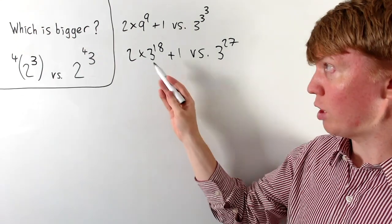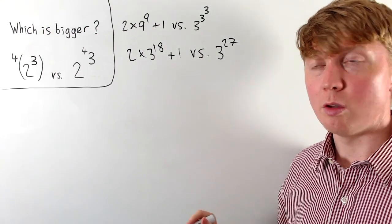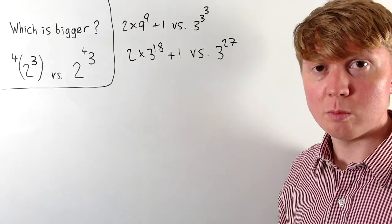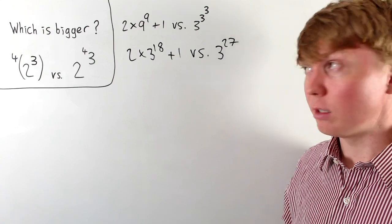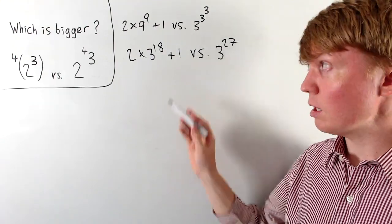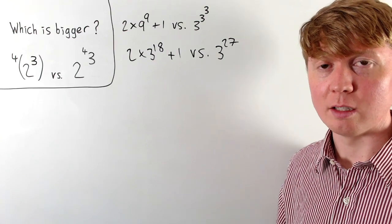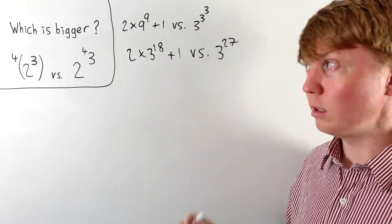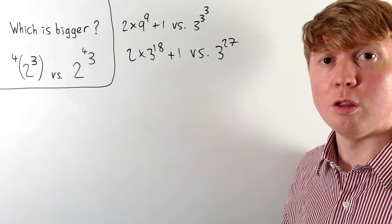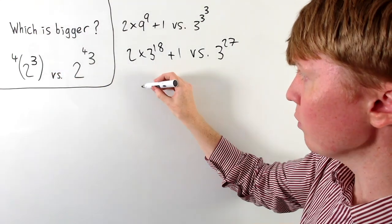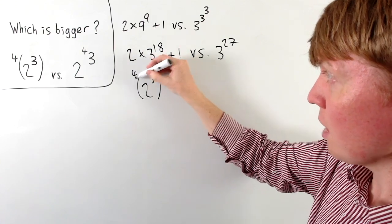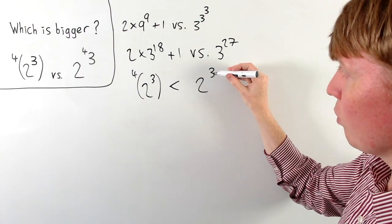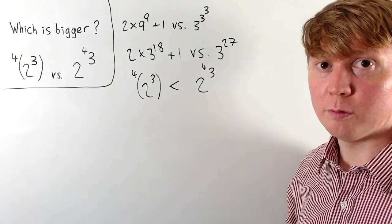At this point, the left-hand expression is clearly much smaller than the right. We've got 3 to the 18 — even multiplied by 2 and adding 1, it's still not as big as 3 to the power of 19, let alone 3 to the power of 27. And remember, we already inflated the left-hand side by changing 8s to 9s, yet it's still far smaller. So we can conclude that the left-hand expression — 2 to the tetration of order 4 using 3 — is much, much smaller than 2 to the tetration of order 4 of the number 3 in the power.